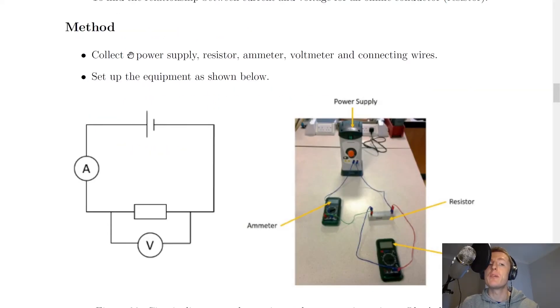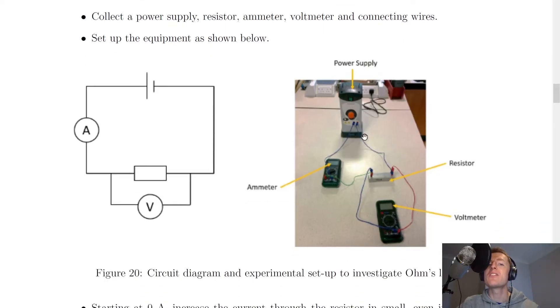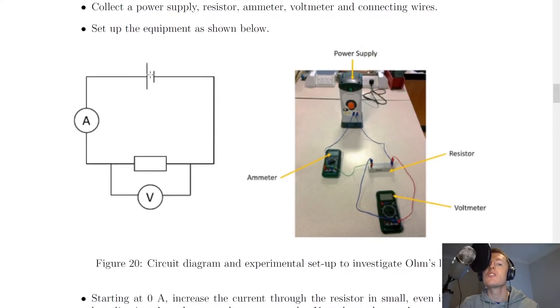Moving on to the method, the equipment you would need first of all is a power supply, a resistor, ammeter, voltmeter and connecting wires. You would then set up the circuit as shown here. So we'd have our power supply, our ammeter and our resistor in series, and then the voltmeter in parallel with the resistor. And there's a picture of what that would look like in real life.